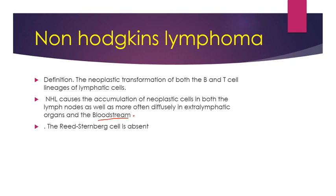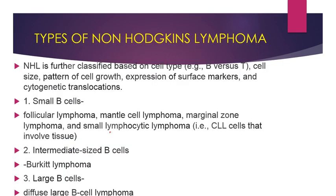The leukemic phase occurs in Non-Hodgkin's Lymphoma because it involves the blood and the extra lymphatic sites. The Reed-Sternberg cells, by contrast, are absent in Non-Hodgkin's Lymphoma — these Reed-Sternberg cells are present in Hodgkin's Lymphoma.